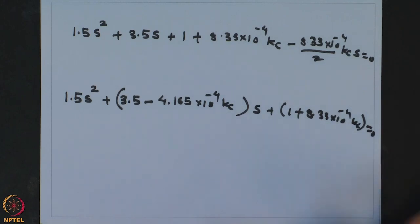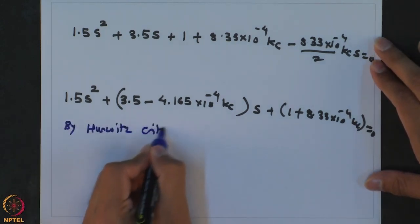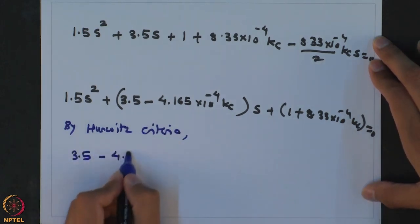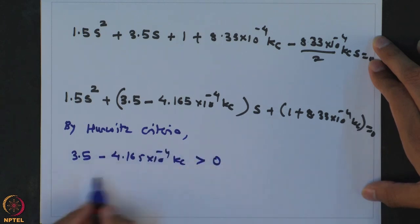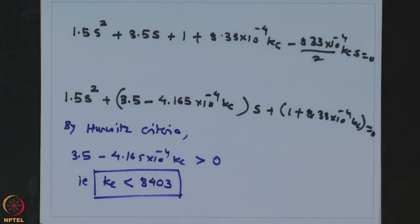Applying the Routh-Hurwitz criteria to this polynomial, we require 3.5 − 4.165×10⁻⁴ Kc > 0, giving Kc < 8403. Note that without measurement delay, infinitely large controller gain could be used while maintaining stability. However, with a measurement delay of just 1 unit, the maximum controller gain reduces to 8403. As the measurement delay increases further, the stability limit keeps reducing — larger measurement delay means a lower maximum allowable controller gain.